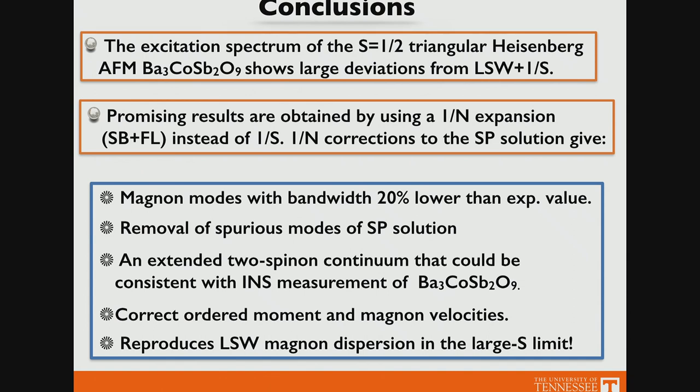To conclude: one can reproduce qualitatively the high-energy continuum of this material using the 1/N approach, but going beyond saddle point the magnon dispersion bandwidth is roughly 20% lower than experiment. You get qualitative improvement relative to saddle point — removal of spurious modes, an extended two-spinon continuum, correct ordered moment, and correct magnon velocities in the long-wavelength limit. Taking the large-S limit in this approximation reproduces exactly the spin wave result. Thank you for your attention.